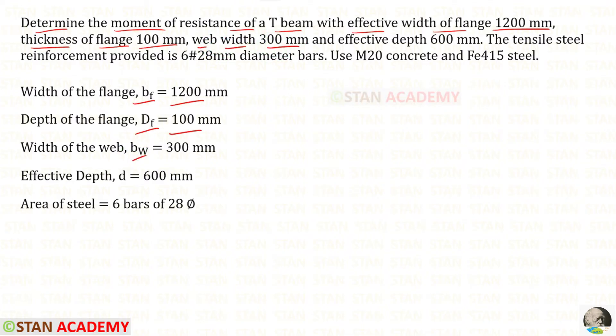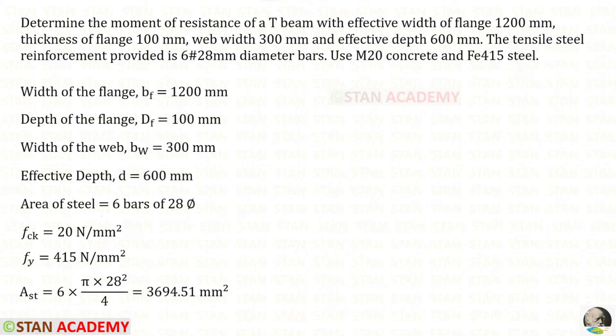Effective depth d = 600 mm. The tensile steel reinforcement provided is 6 bars of 28 mm diameter. Use M20 concrete and Fe415 steel, so fck = 20 N/mm² and fy = 415 N/mm². Using this data we can find Ast = 3694.51 mm².